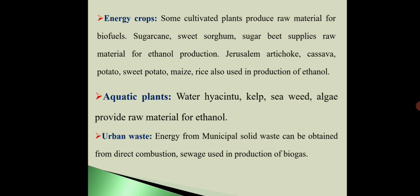The third source is energy crops. Some cultivated plants produce raw material for biofuels. Sugar cane, sweet sorghum, and sugar beet supply raw material for ethanol production. Jerusalem artichoke, cassava, potato, sweet potato, maize, and rice are also used in the production of ethanol.